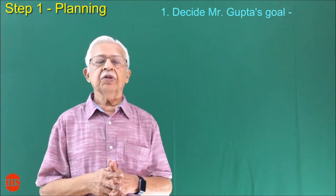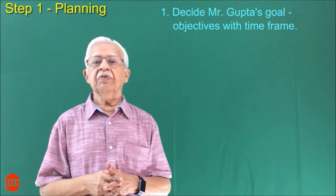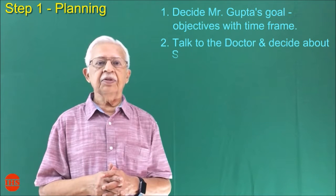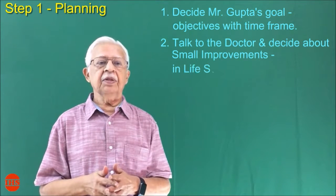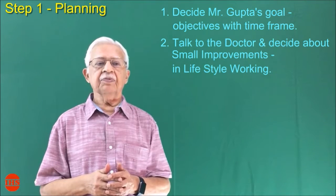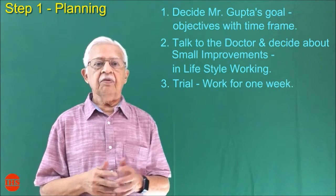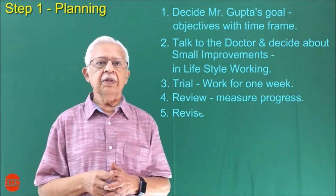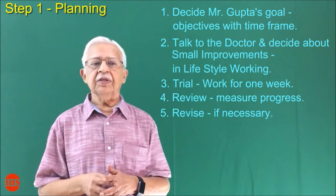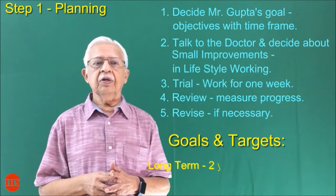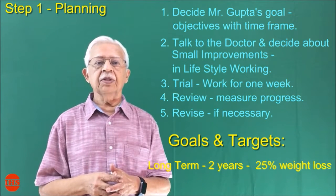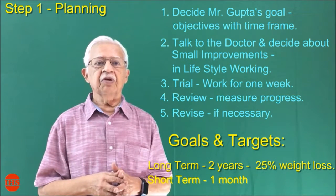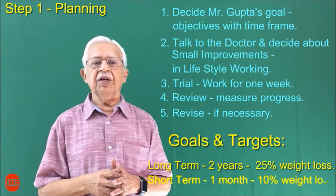Decide Mr. Gupta's goals and objectives with a timeframe. Talk to the doctor and decide about small improvements in lifestyle. Working trial: work for one week. Review: measure progress. Revise if necessary. Goals and targets — long term: two years, 25% weight loss. Short term: one month, 10% weight loss.